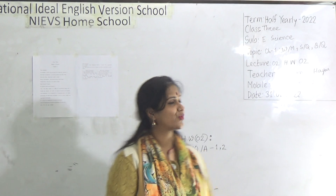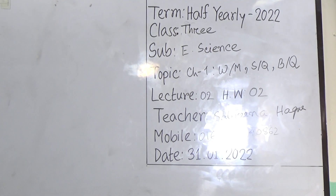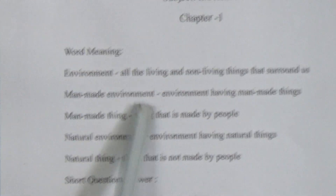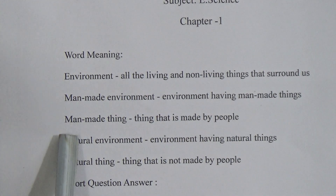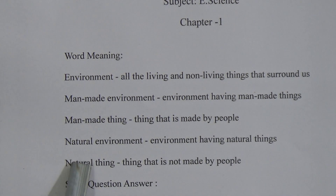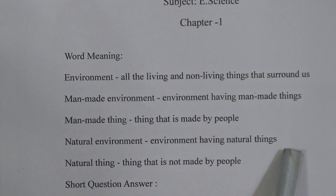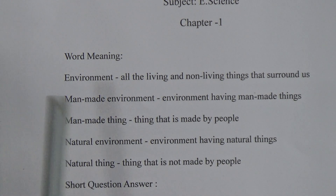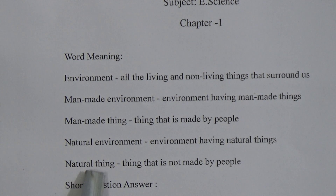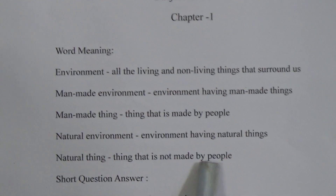Today's topic is based on word meanings, short question answers, and broad question answers. The first word is environment — all the living and non-living things that surround us. Next is man-made environment — environment having man-made things. Man-made things are things made by people. Natural environment is environment having natural things. A natural thing is a thing that is not made by people.